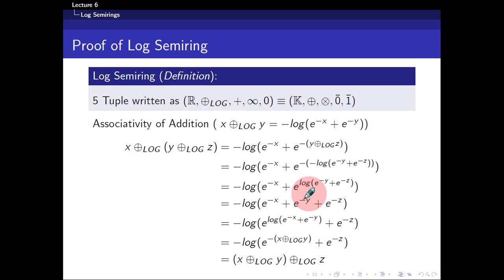So e and log, you cancel out and then you just get whatever is in the power. So you'll get this key step here, e power minus x plus e power minus y plus e power minus z.